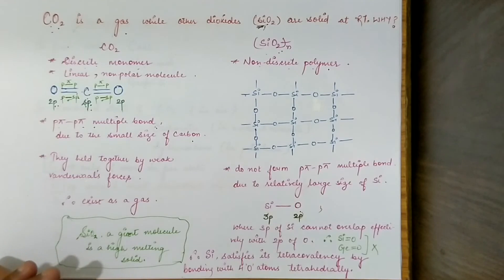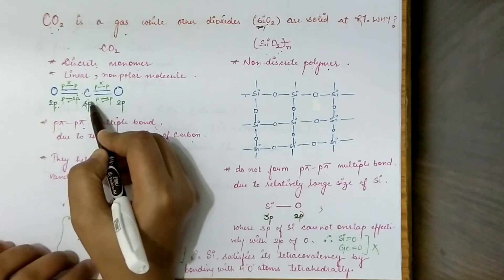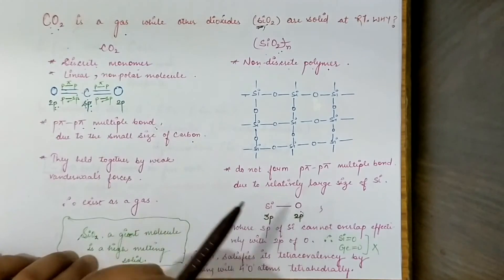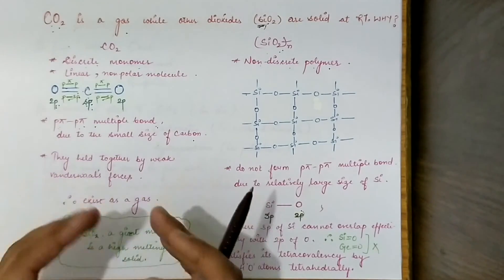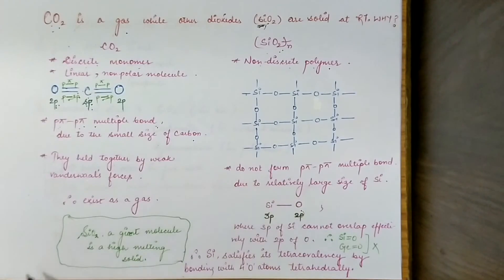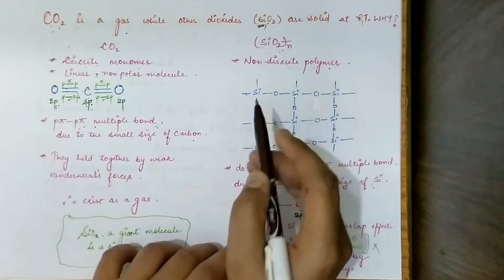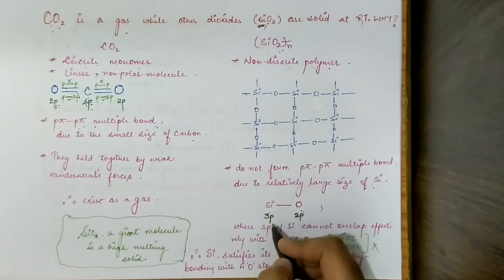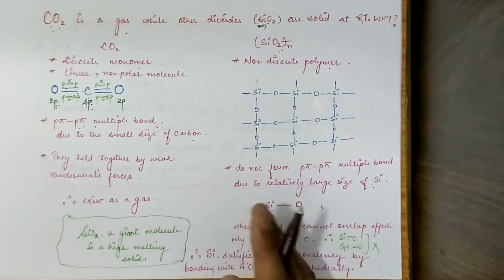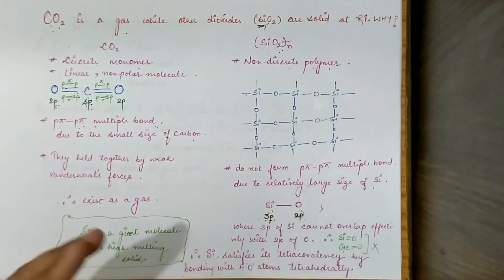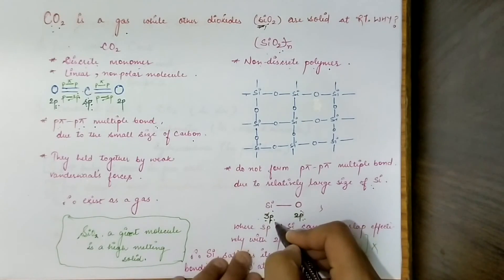In carbon dioxide, the carbon p orbital and the oxygen p orbital participate in bonding, forming the p-pi p-pi multiple bond due to the small size of carbon. But going down group 14 from carbon to silicon, atom size increases. Silicon has a d orbital — there is involvement of the d orbital. The electronic configuration of silicon is 3s² 3p² with an empty 3d⁰ orbital. So the orbitals that overlap are the 2p orbital of oxygen and the 3p orbital of silicon.